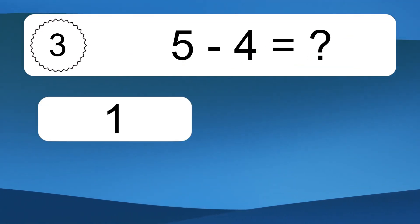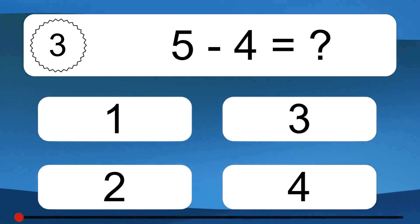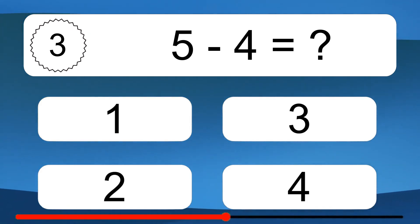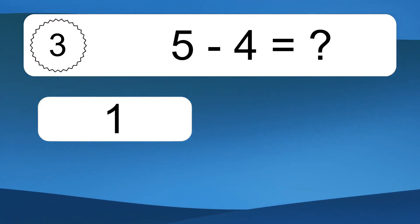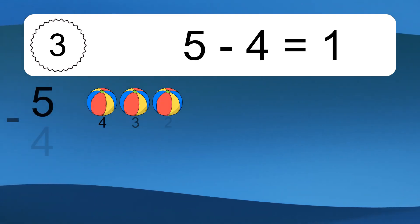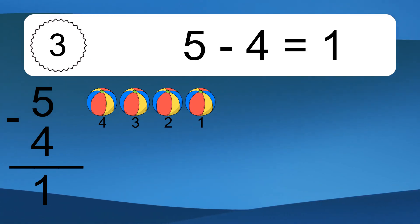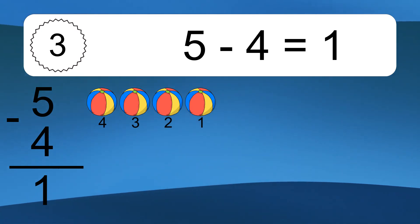5 minus 4 equals what? 5 minus 4 equals 1. Let's count it: 4, 3, 2, 1.